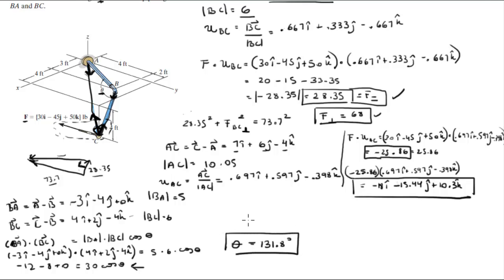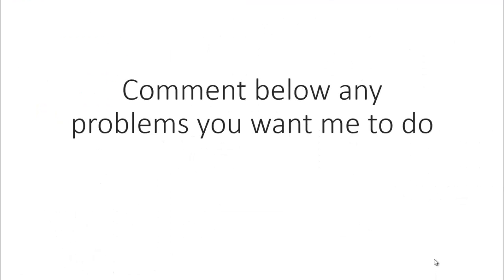Final answer for the angle. So we found the angle between BA and BC, found the projection along AC in Cartesian vector form by multiplying the negative magnitude by the unit vector, and found the projection along and perpendicular to BC using the dot product and Pythagorean theorem. Please comment below if you want me to do any problems and I'll be happy to help — thank you.